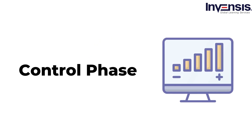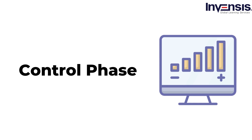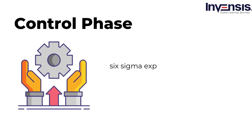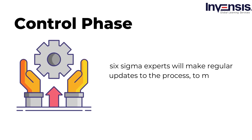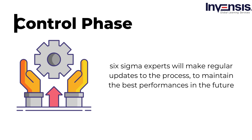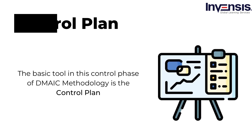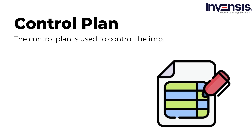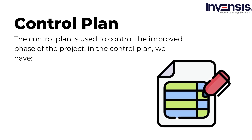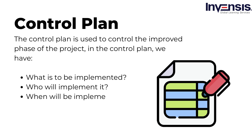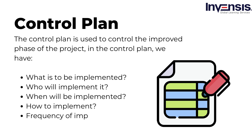Next, we will see the last phase of the DMAIC methodology: the control phase. This is the final phase of DMAIC in Six Sigma. In this phase, Six Sigma experts will make regular updates to the process, which will help maintain the best performance in the future. The basic tool used in the control phase is the control plan. This is used to control the improved phase of the project. The control plan addresses: what is to be implemented, who will implement it, when it will be implemented, how to implement it, frequency of implementation, and approved by whom.